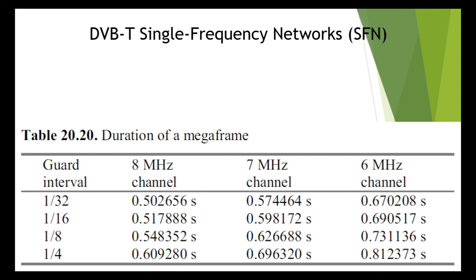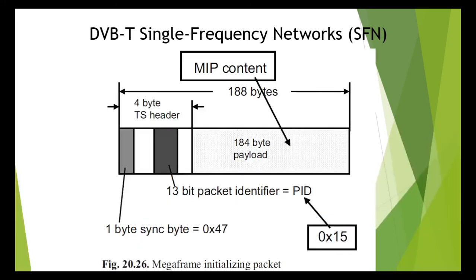A MIP can also be used for transmitting additional information, such as the DVB-T transmission parameters, which makes it possible to control and configure the entire DVB-T SFN from one center. For example, it can be used for changing the type of modulation, the code rate, or the guard interval length. However, although this is possible, it may not be supported by every DVB-T modulator.